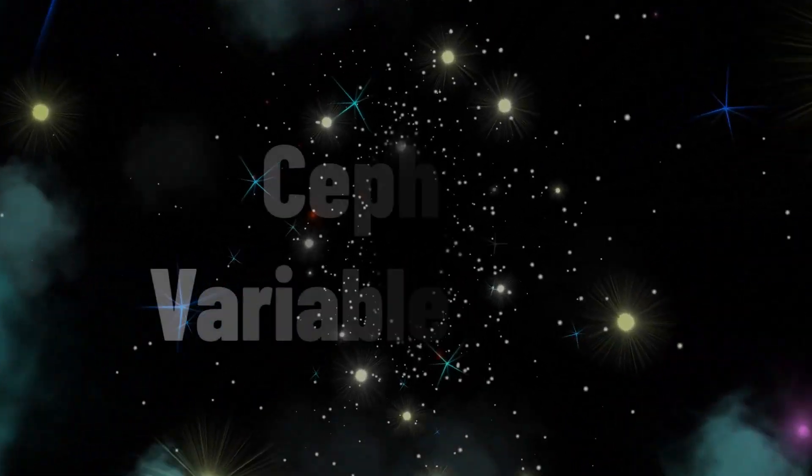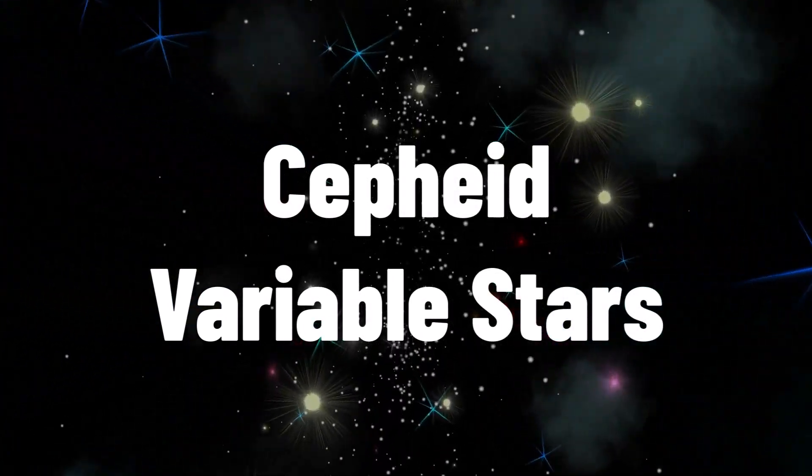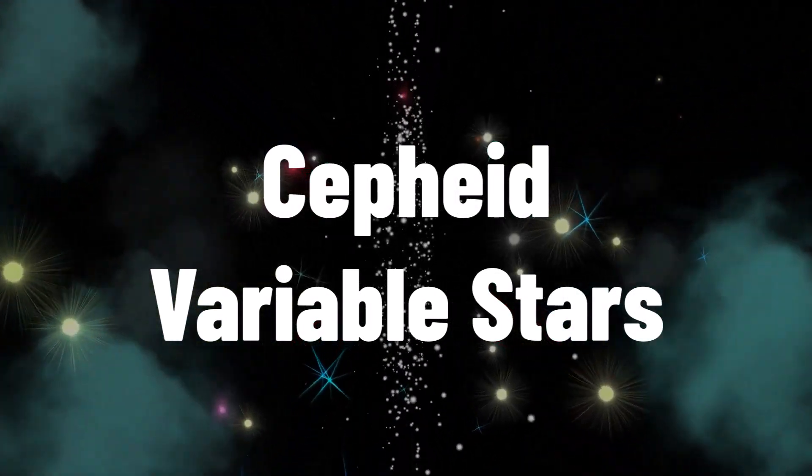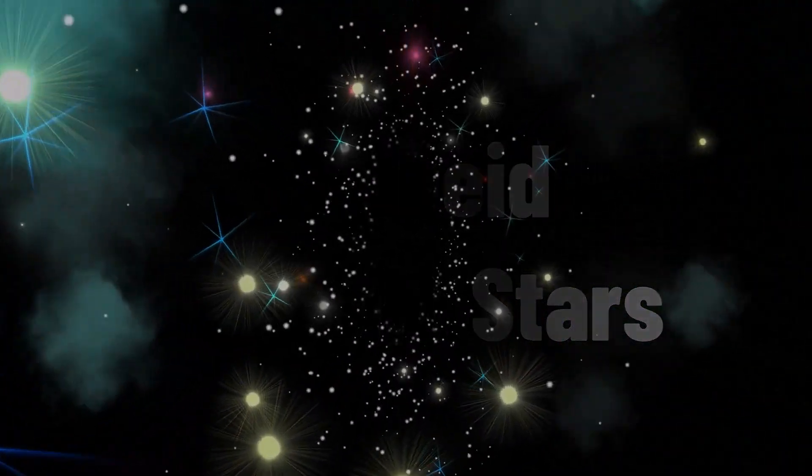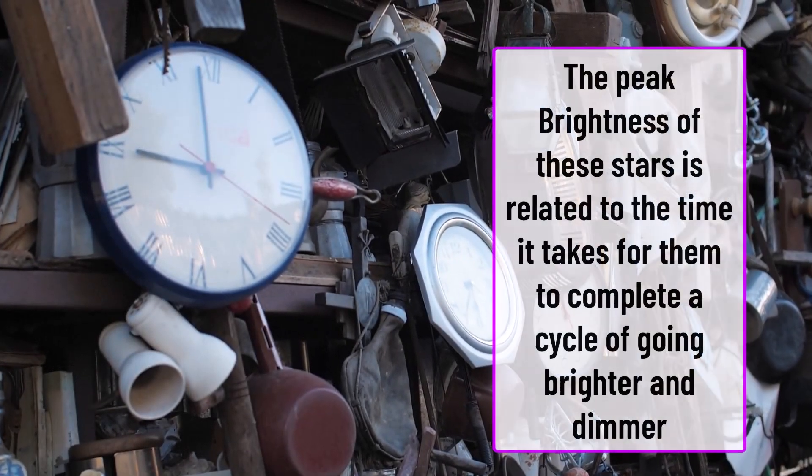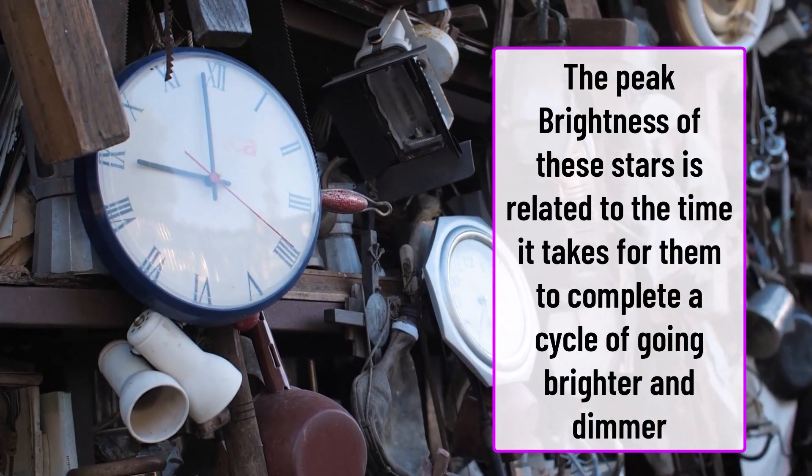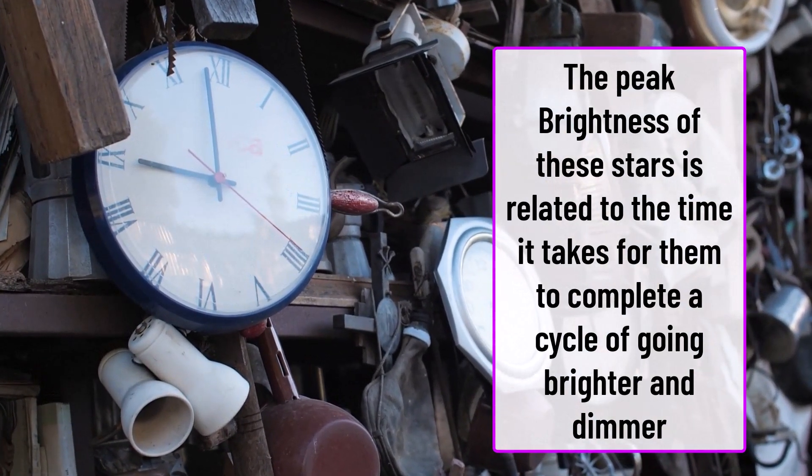Certain stars are what's known as Cepheid variables. These are special types of stars which vary in brightness periodically. Essentially they'll go dimmer and then brighter again in a regular repeating pattern. The time for this pattern of dimmer brighter is intrinsically related to the luminosity or light power output of the star.